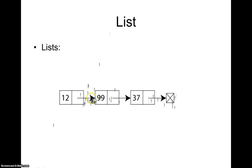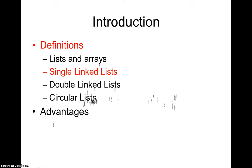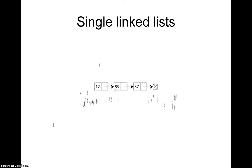A singly linked list is a simple list where one node connects to the next, and the last node points to null. This is what we call a singly linked list.